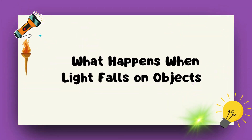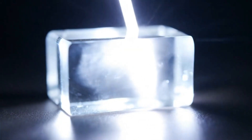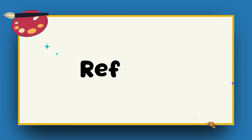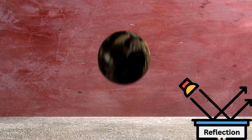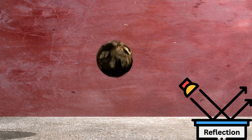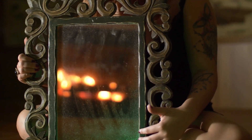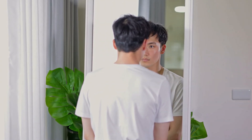What happens when light falls on objects? Light is like a curious traveler — it's always on the move. When it hits an object, it can do one of three things. First, light can bounce off, like a ball on a wall. Think of a shiny mirror — you can see your reflection in a mirror just because of this behavior of light.